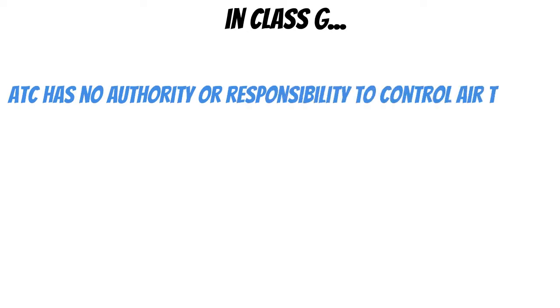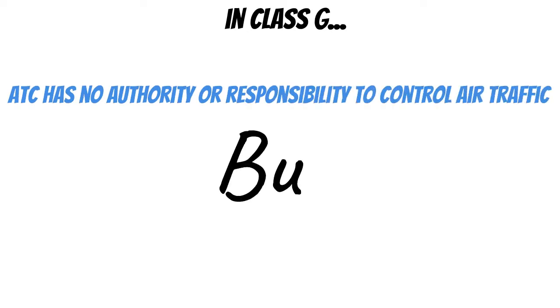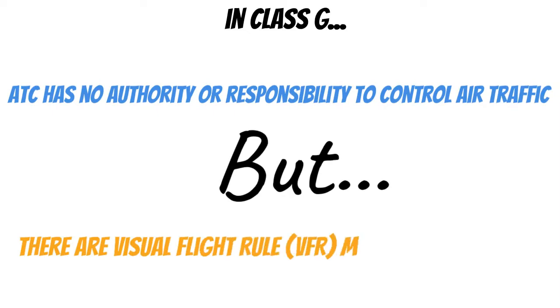Here in Class G airspace, air traffic control has no authority or responsibility to control air traffic, but there are visual flight rule minimums that apply in this airspace. We'll take a look at those in just a second, but first let's take a look and see how we can identify Class Golf.